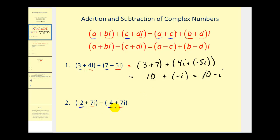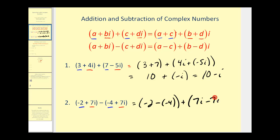We follow a similar process for subtraction. Since we're subtracting now, we'll subtract the real parts and subtract the imaginary parts. So we'll have negative two minus negative four, plus seven i minus positive seven i. The result: negative two minus negative four becomes negative two plus four or positive two, and zero i, which is just zero, so the result is two. It's pretty much just like combining like terms.